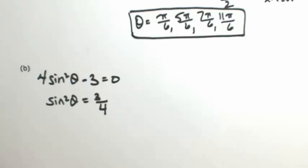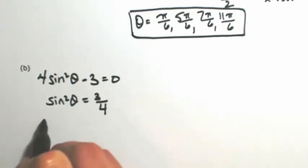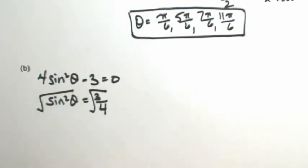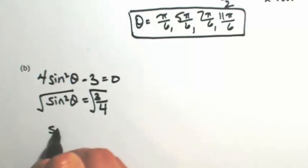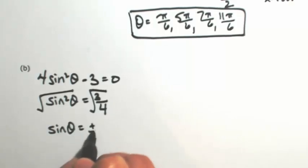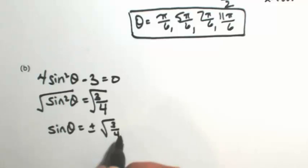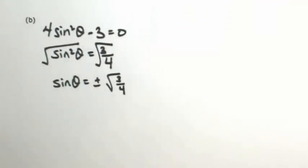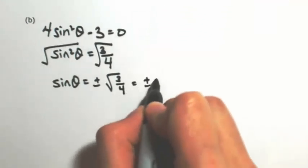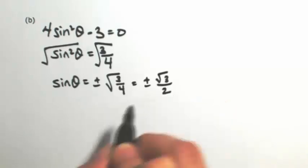And then just like we did a moment ago, I'm going to take the square root of both sides. Keeping in mind, that yields a plus and a minus. So we get plus or minus square root of 3 over square root of 4, which is 2. And the sine function deals with the y-coordinate.